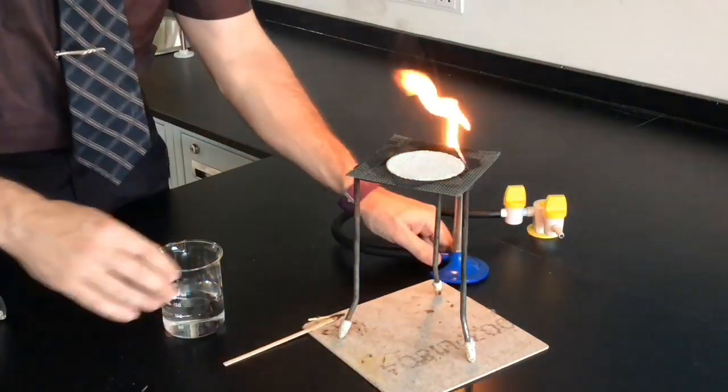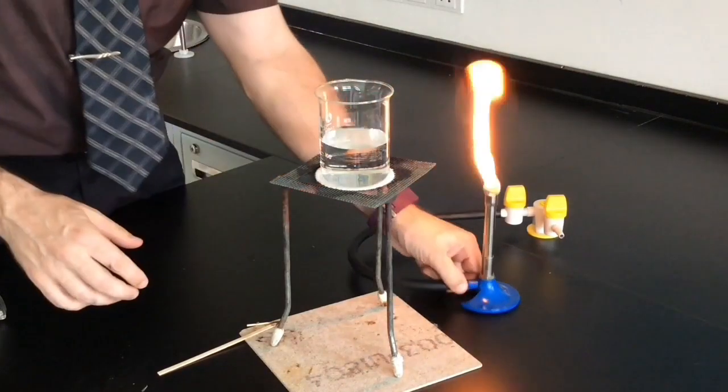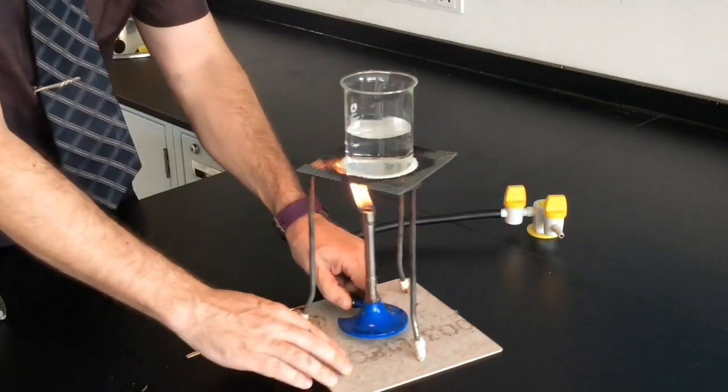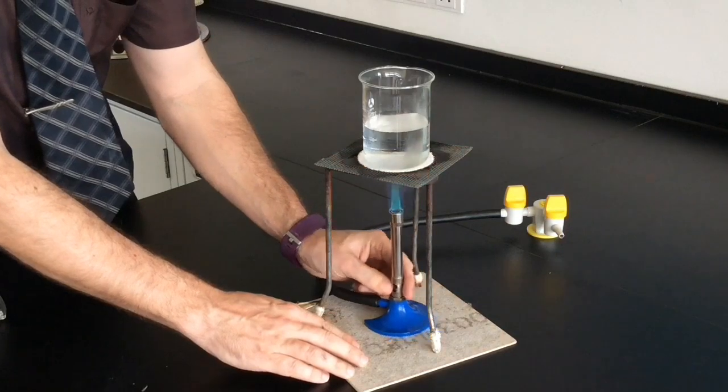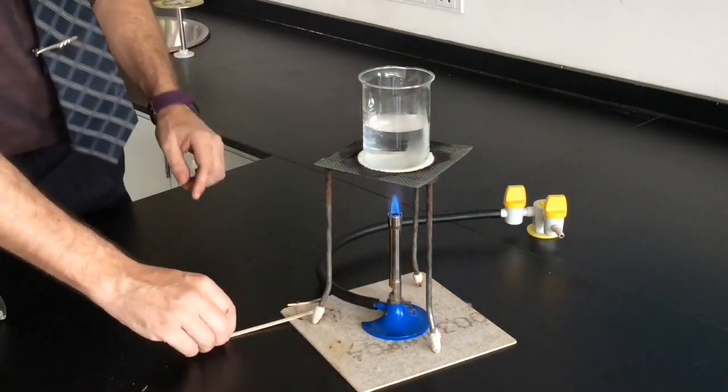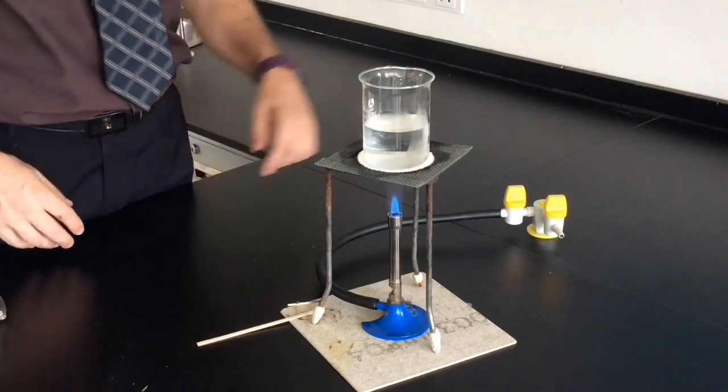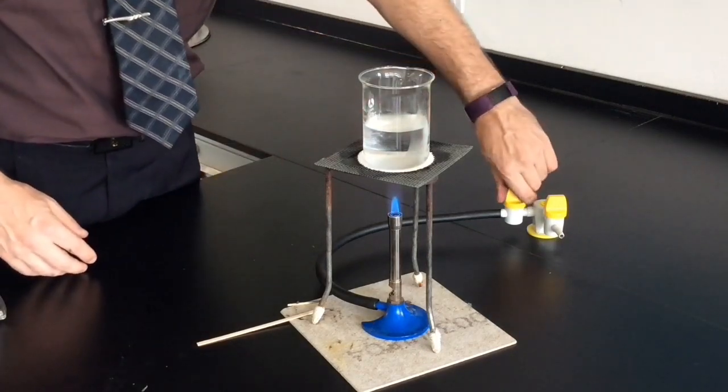But I don't heat anything yet. Beaker on top first. Put the Bunsen in. Open the air hole. Heat away. When you're done turn off the Bunsen.